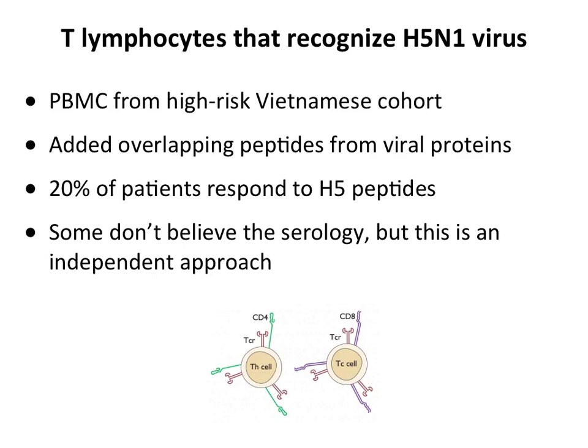When a T cell recognizes a peptide it knows — in the context of an MHC molecule on another cell — it gets activated and produces interferon-gamma, which you can easily measure in culture. Of the 800 patients, 20% responded to H5 peptides. These people had not been sick — medical histories confirmed no serious illness. So these were people who probably had mild infections. This is an independent method using cellular immunity, not serology, to assess H5 exposure, so they can't both be wrong.